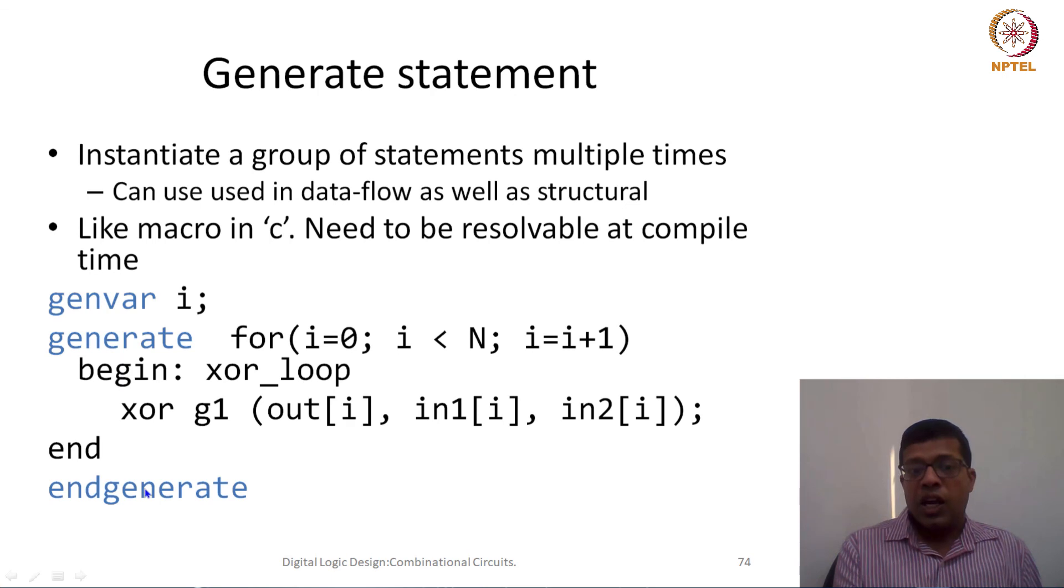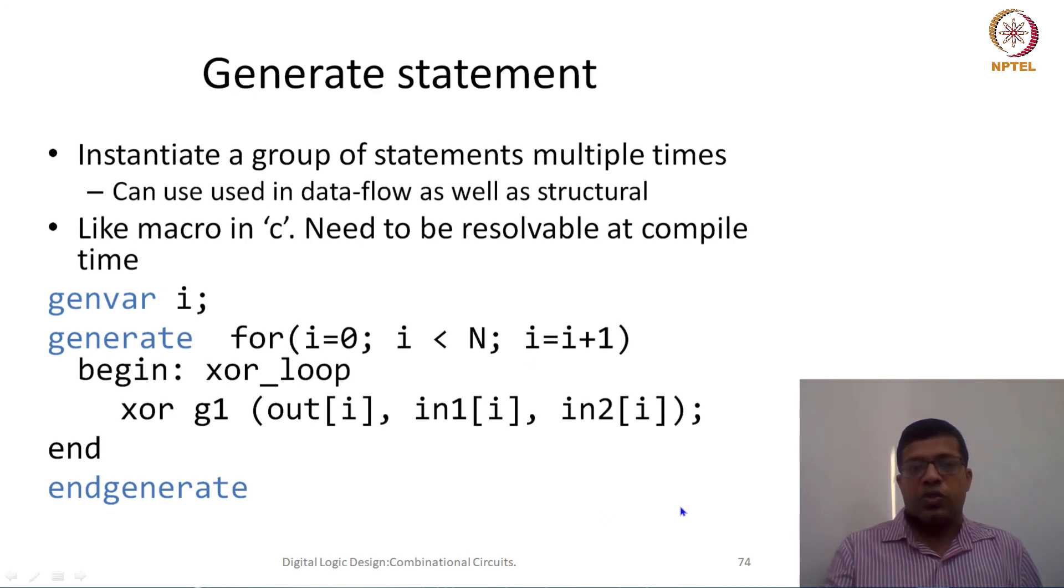Each of these XOR gates would be taking different input based on this genvar i. This is a more effective method sometimes to write a circuit where the circuit looks very similar. For example, in the ripple carry adder we have to use N different single bit adders which have very similar definitions, so we can use such kind of a construct.